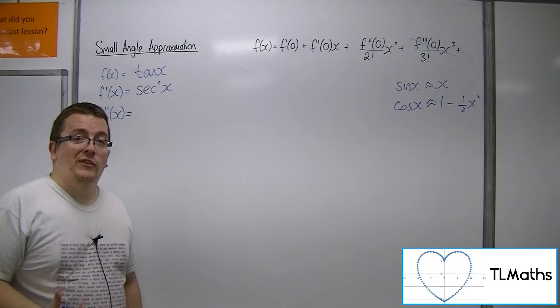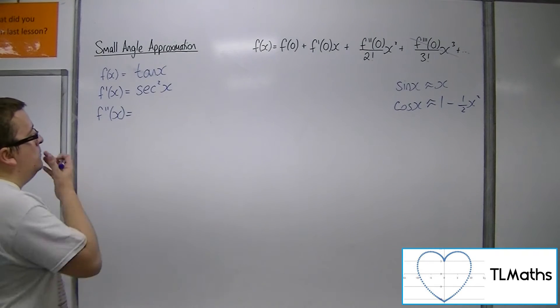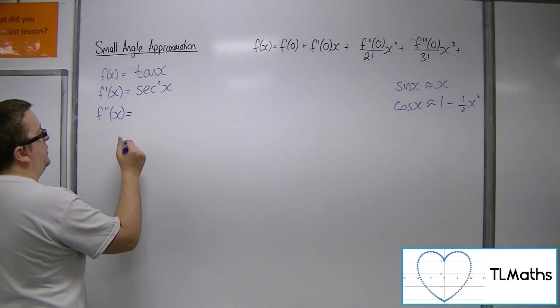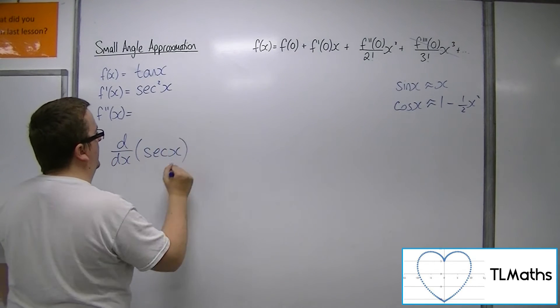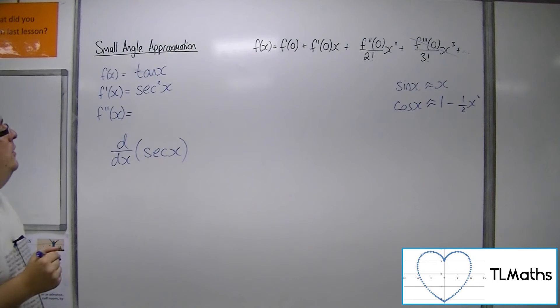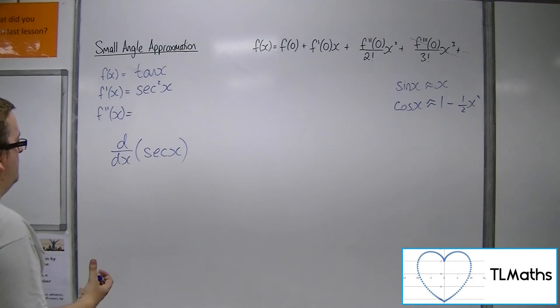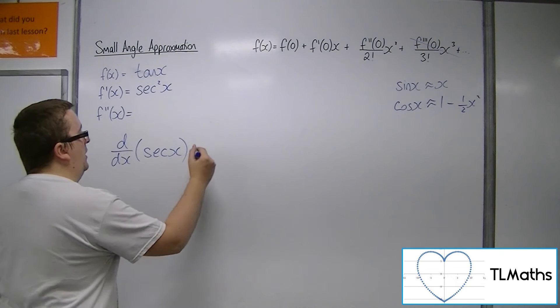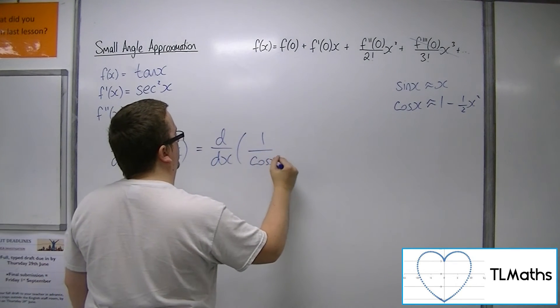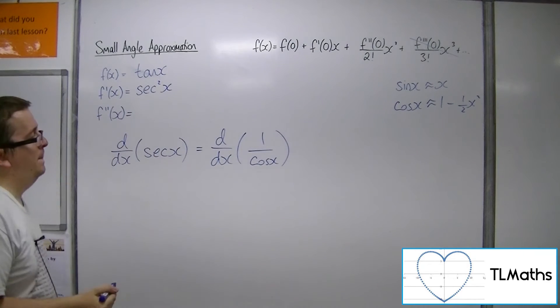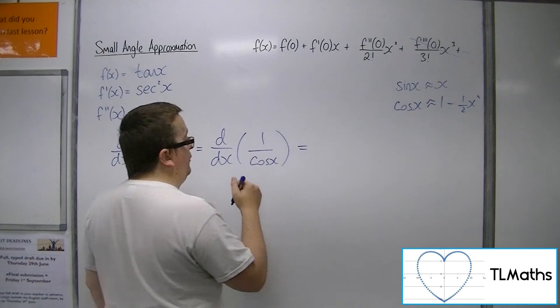So, what is the derivative of sec? Because if I know the derivative of sec, I could use chain rule or product rule from then on. So, this is the derivative of 1 over cos. Now, you could use the chain rule here, or you could use the quotient rule. I'm going to use the quotient rule. So, that's the bottom times the derivative of the top, take away the top times the derivative of the bottom, all over the bottom squared.